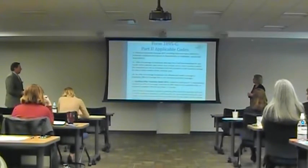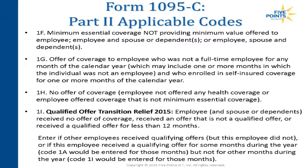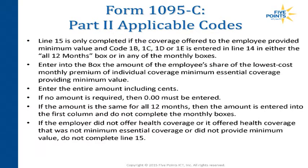The last code, 1I, is qualified offer transition relief — employee and/or spouse and dependents received no offer because the employer was eligible for some transition relief and didn't have to offer that coverage to those individuals.